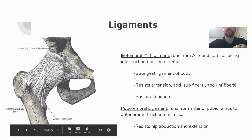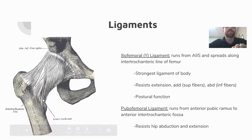The iliofemoral ligament spreads along the intertrochanteric line. The pubofemoral ligament runs from the anterior pubic ramus to the anterior intertrochanteric fossa, with its primary restriction against hip abduction and extension, since it is anterior to the axis of motion.